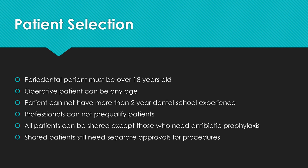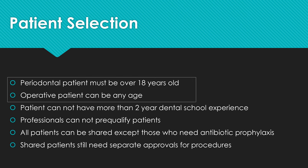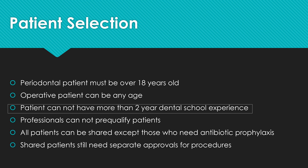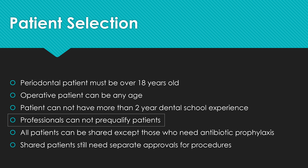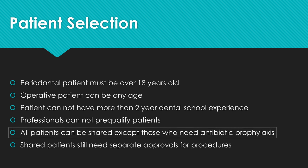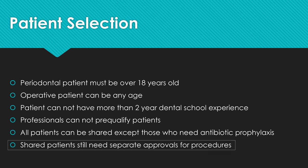For patient selection: perio patients must be over 18; operative patients can be any age. Patients cannot have more than two years of dental school experience. No dentist or professional is allowed to pre-qualify the patient — you officially cannot ask someone if a patient is REBS-eligible. All patients can be shared with one exception: patients requiring antibiotic prophylaxis cannot be shared. Shared patients still need separate approvals for all procedures — you submit your own x-rays and paperwork even if it's the same patient.